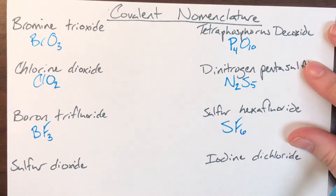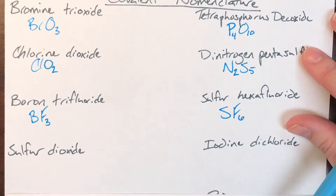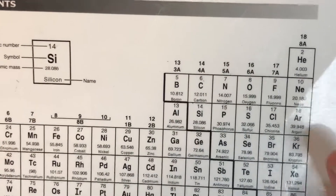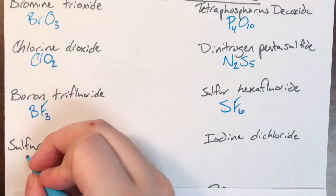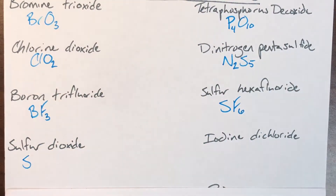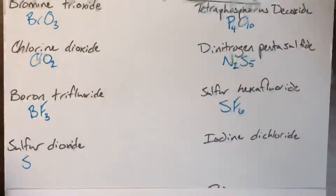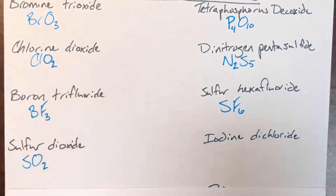Next is sulfur dioxide. Sulfur is S — no prefix, no subscript. Dioxide: oxide is O, and di means 2. So SO2 is the formula for that.